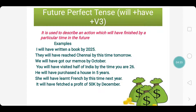We will have got our memos by October. You will have visited half of India by the time you are 26 years old. He will have purchased a house in 5 years. She will have learnt French by this time next year — that means she is learning or planning to learn, and by this time next year the learning process of French would come to a conclusion. It will have fetched a profit of 50,000 by December.